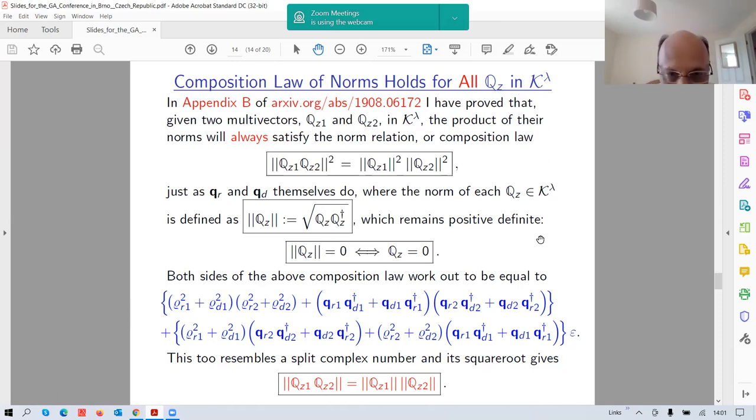If you assume the norm to be defined as a geometric product between an arbitrary element of K lambda times its conjugate or reverse, then it is completely straightforward calculation to show that the left hand side and the right hand side of this equality are exactly the same. The first box is exactly the same, and this is the quantity: it is entirely a scalar quantity. The first curly brackets is a scalar quantity, the second curly brackets is also a scalar quantity, but it is multiplied by an epsilon, which is the pseudo scalar. So this is again a split complex number. Because of this property, the norm relation holds for all elements of K lambda, despite what Professor Lasenby claimed.